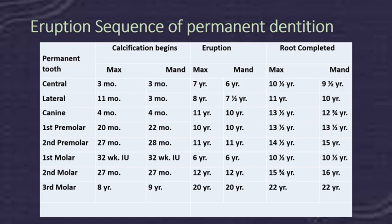At age 11, the mandibular premolars and maxillary canine erupt, followed by the second molar at age 11 to 12 years. As mentioned, there is a close relationship between root completion and eruption: when three quarters of the root forms, the tooth erupts — except for the first permanent molar and central incisor, where half root formation triggers eruption. The remaining quarter or half of root formation completes after the tooth has erupted.